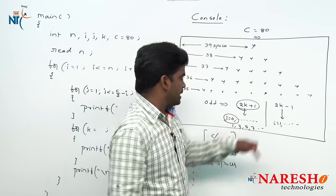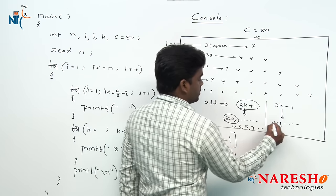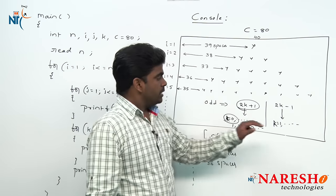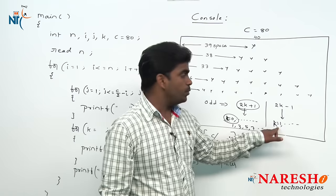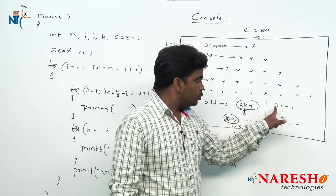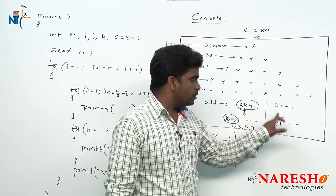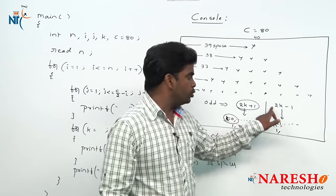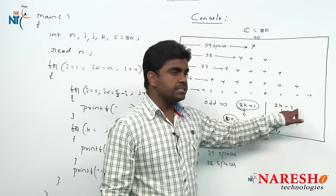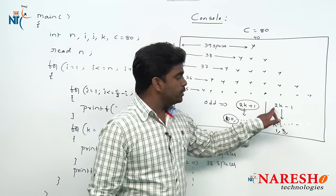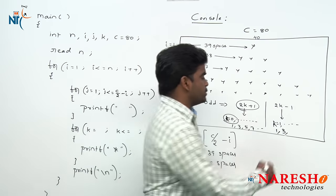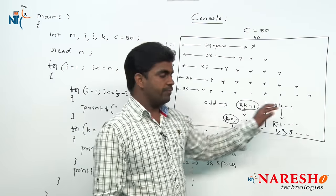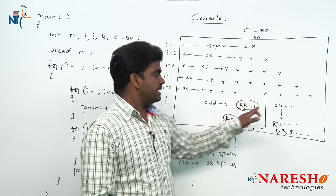For 2k minus 1 with k starting at 1: k=1 gives 2×1−1=1; k=2 gives 2×2−1=3; k=3 gives 2×3−1=5. So either formula works — use 2k plus 1 when k starts at 0, and 2k minus 1 when k starts at 1. Since our i starts at 1, we use the second formula.